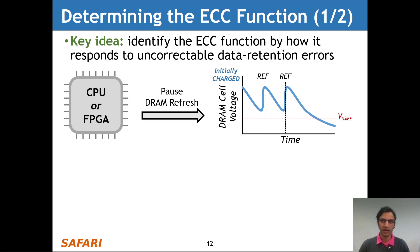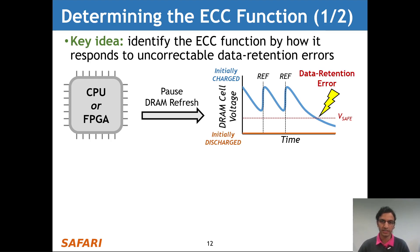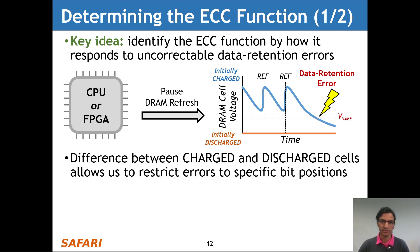A single cell that starts out in the charged state loses charge over time naturally. Although periodic refresh operations maintain this charge value, once we pause DRAM refresh, the cell voltage drops below the safe voltage value, beyond which we can no longer identify the initial stored value — resulting in a data retention error. In contrast, a cell that starts out in the discharge state remains in the discharge state for all time.